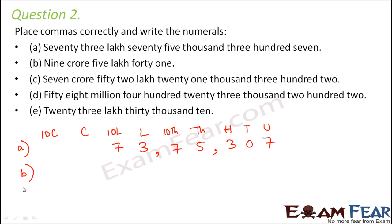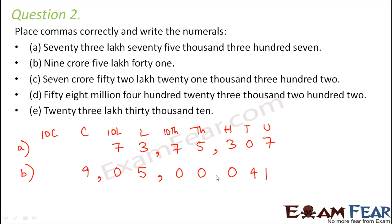Let's look at the next one: 9 crore, 5 lakh, 41. So 9 crore — this is the crore place. 5 lakhs: in the 10 lakhs place this is going to be 0 because it is only 5 lakhs, so this would be 0, 5. And 41 would be in the 10s and units place. The thousands place and hundreds place are going to be 0. When you place the commas they should separate the crores, lakhs, and the thousands.